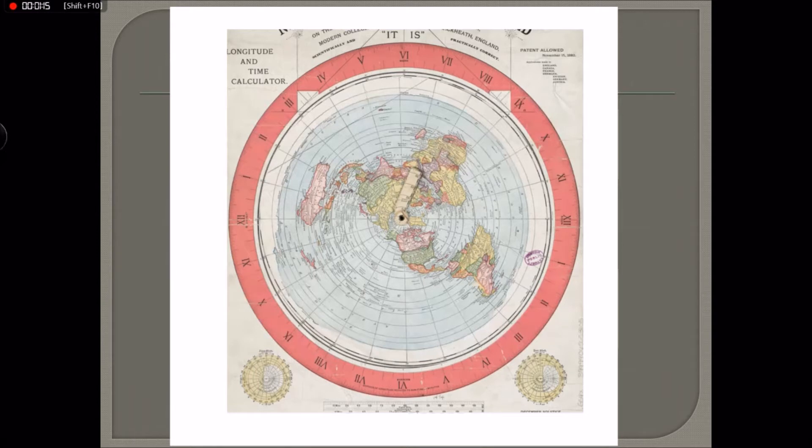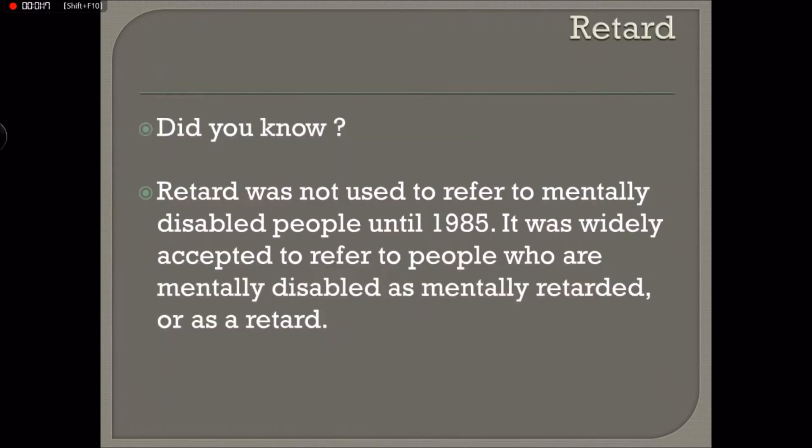Well, okay, we know this, the Euclidus map. But did you know that retard was not used to refer to mentally disabled people only until 1985? And it was now basically widely accepted to refer to people who are mentally disabled as mentally retarded or as a retard.